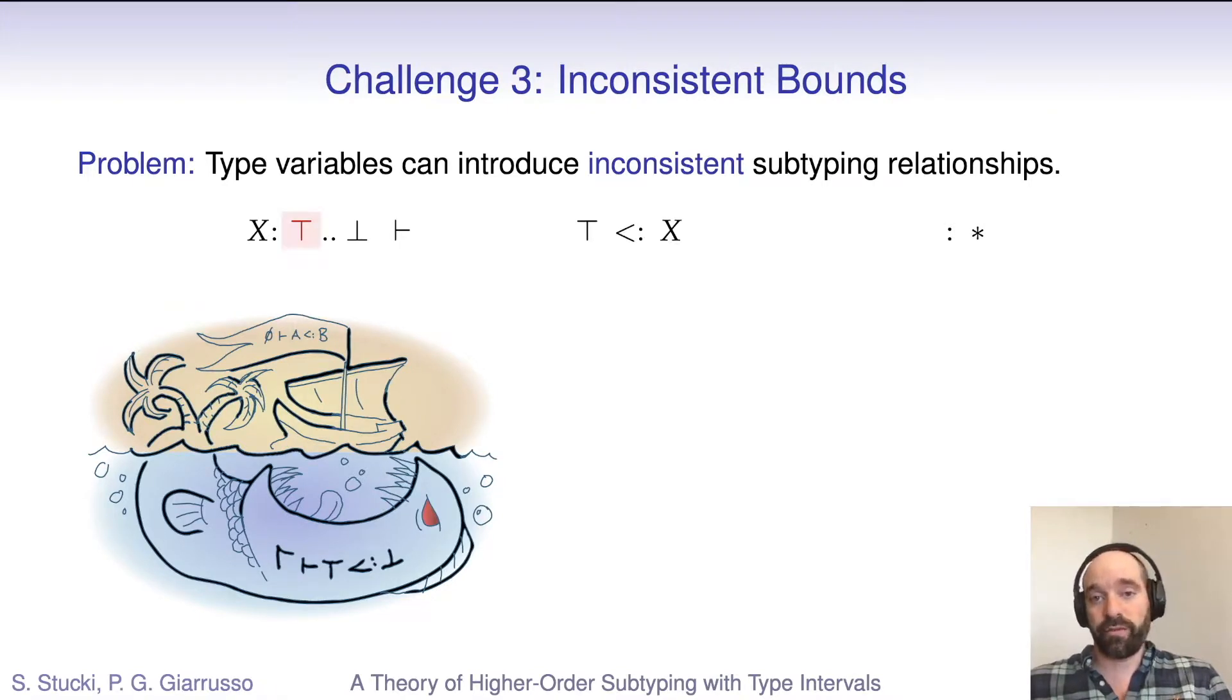Now, because top is a lower bound of x, we can derive that it's also a subtype of x. And because top is a supertype of every other type, any type whatsoever by transitivity is a subtype of x. But x also has bottom as an upper bound, which means that x is a subtype of bottom. And because bottom is a subtype of every other type, any type whatsoever is a supertype of x. And so by transitivity, any type is a subtype of any other type we want. The subtyping relation becomes trivial, and we can relate types with completely different type constructors. So inversion is never gonna work.